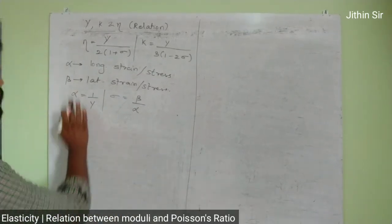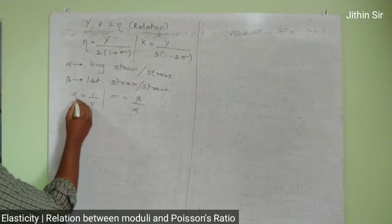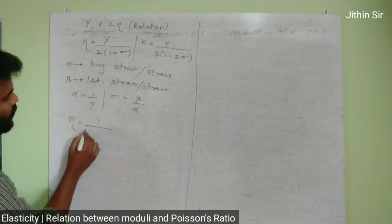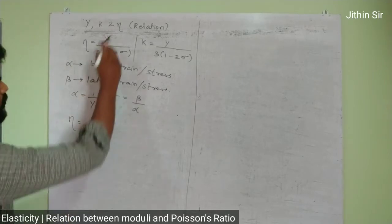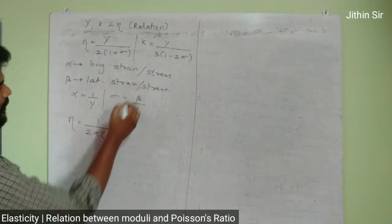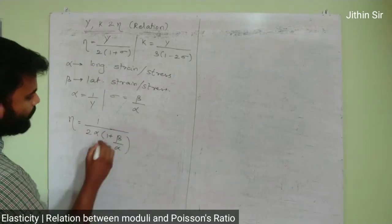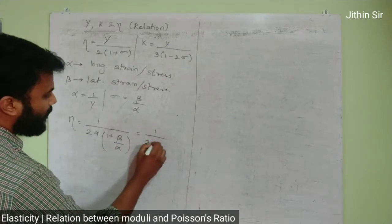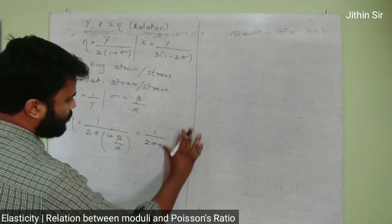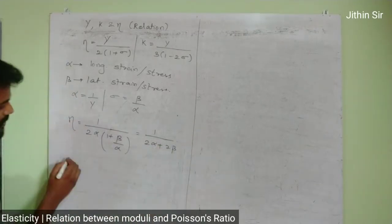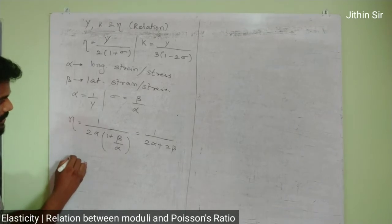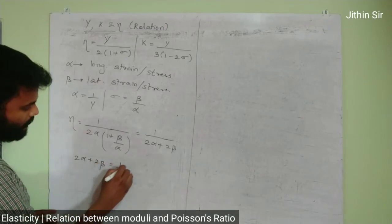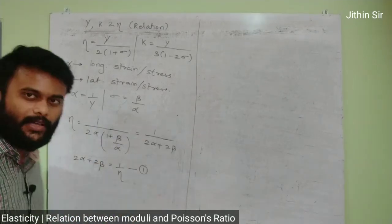Now from the relation for eta, we can write one upon eta equals 2 alpha times 1 plus sigma. This gives us alpha times alpha plus 2 beta. We can write this as 2 alpha plus 2 beta equals one by eta. Let me call this equation 1.